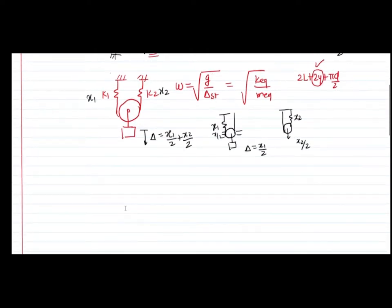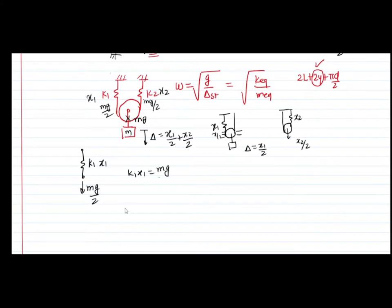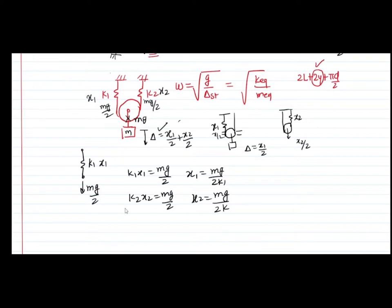Now considering forces in the springs for the free body diagram: the mass is m, so the tension in the string is mg, distributed as mg/2 on each side of the pulley. For spring 1 with stiffness k1, the force balance gives k1*X1 = mg/2, so X1 = mg/(2*k1). Similarly, k2*X2 = mg/2, giving X2 = mg/(2*k2). Substituting these X1 and X2 values into the delta formula, and then into the natural frequency formula, gives us the k_equivalent value.